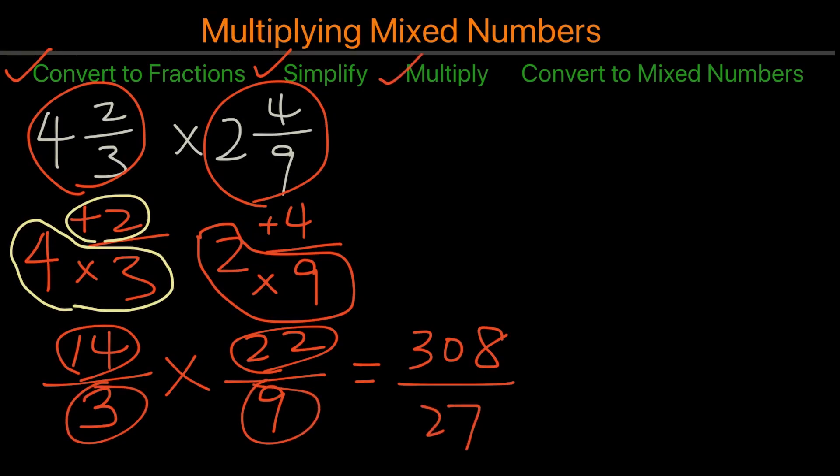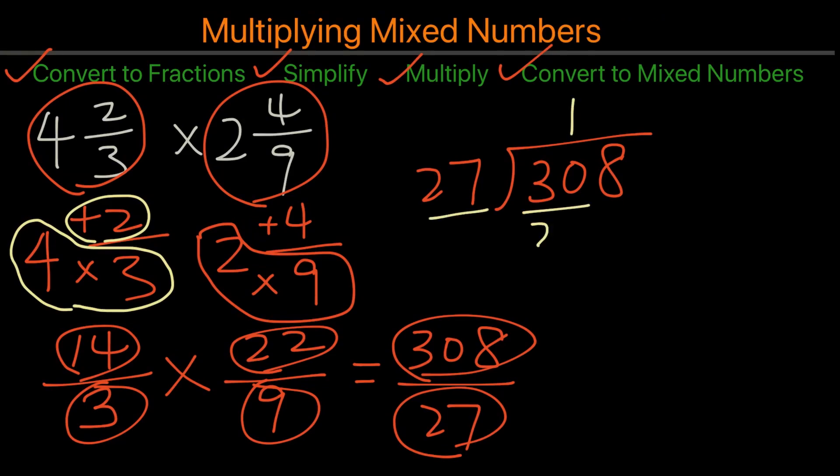Now the final step will be converting it back to the mixed number. And in order to do that, we will take 308 divided by 27. So we're basically taking the numerator divided by the denominator. So from here, 30 divided by 27 is 1. This becomes 3, bring down the 8. And now we have 38 divided by 27, which would be 1, 27, and then we will have 11. So 11 would be the remainder.